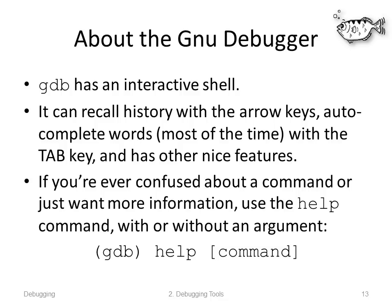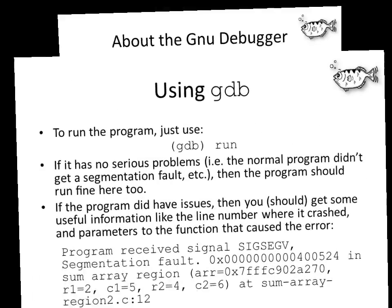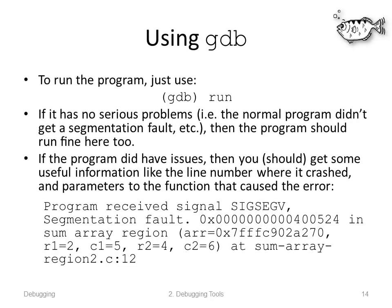If you're ever confused about a command or just want to be reminded, use the help command with or without an argument. So, using gdb as the prompt from the GDB shell, type 'help' and then a command — for example, 'help help' — and it'll tell you all about that command.